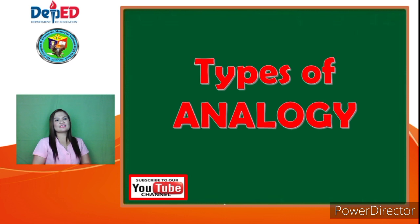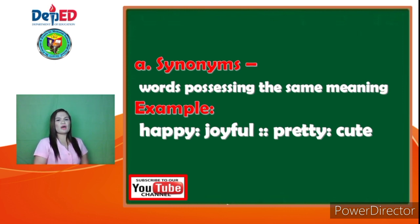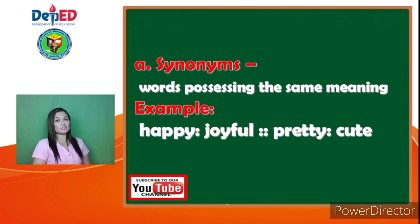Analogies have varied types. First, we have synonyms — these are words possessing the same meaning. For example, happy is to joyful as pretty is to cute. As you notice, those words possess the same meaning.